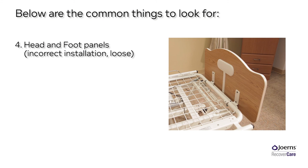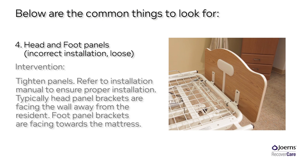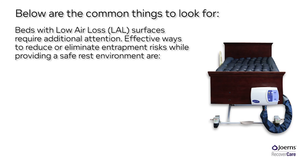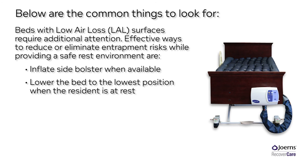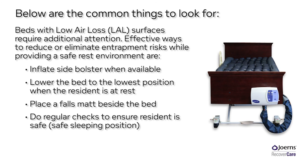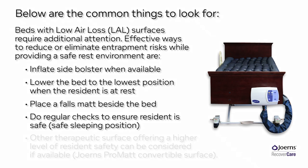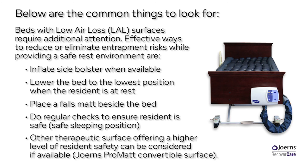Intervention 4: Head and foot panels — incorrect installation or loose. Intervention: tighten the panels and refer to the installation manual to ensure proper installation. Typically, head panel brackets are facing the wall away from the resident, and foot panel brackets are facing towards the mattress. Beds with low air loss or LAL surfaces require additional attention. Effective ways to reduce or eliminate entrapment risks include inflating the side bolster when available, lowering the bed to the lowest position when the resident is at rest, placing a falls mat beside the bed, and doing regular checks to ensure the resident is in a safe sleeping position.